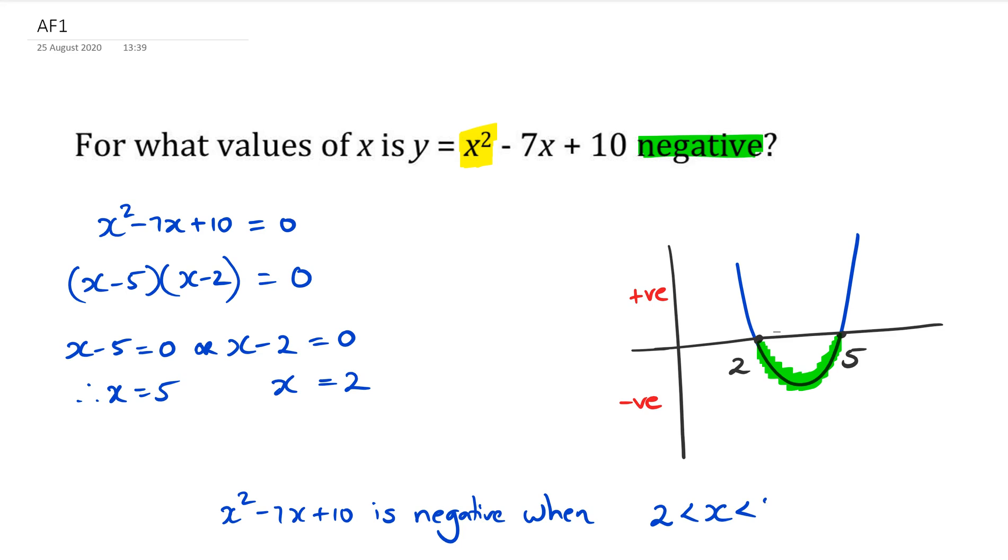We have to make sure that we don't actually put that less than or equal to, because if x equals to 2, then what's going to happen is y is equal to zero. Remember, if x equals to 2 or x equals to 5, then y is equal to zero. That's why we don't actually put that equal sign here, and it's just less than.